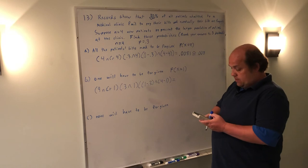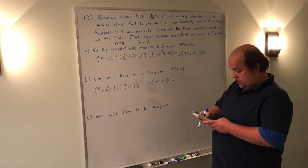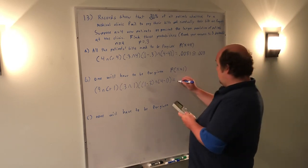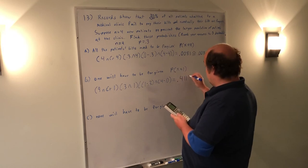When I put it into my calculator this way, putting in a 1 for the number of successes, this time it tells me that the probability is 0.4116.